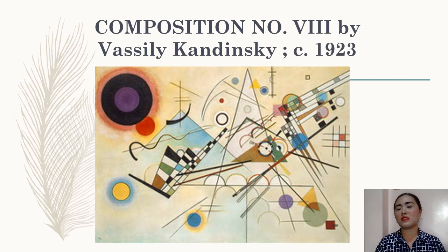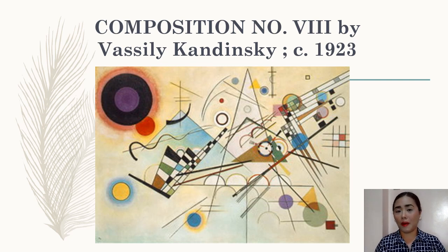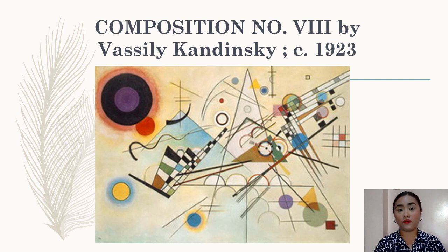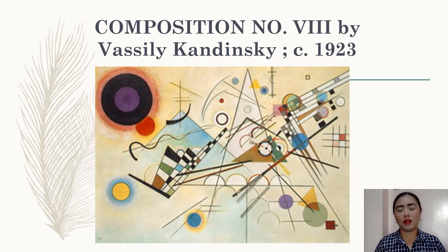What aspects of Composition Number 8 showcase the principle of emphasis? When you first saw the painting, where was your eyesight automatically directed? If your answer is the dark circle on the top left corner, then you are correct — that is the focal point. That dark circle also serves as a magnet that pulls all of the different elements together. Composition Number 8 is a clutter of different lines, shapes, and colors, but through this dark circle, it pulls all the elements together to make it harmonious.